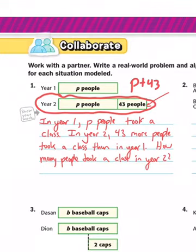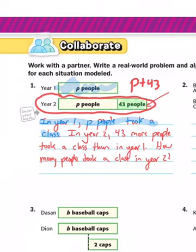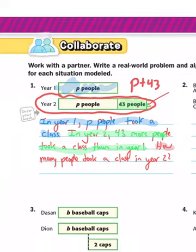So what I did: in year one there was an unknown amount — P people took a class. Then in year two, I wanted to show that 43 was being added on. So in year two, 43 more people took a class than in year one. And like you should always do, I ended it with a question: how many people took a class in year two?